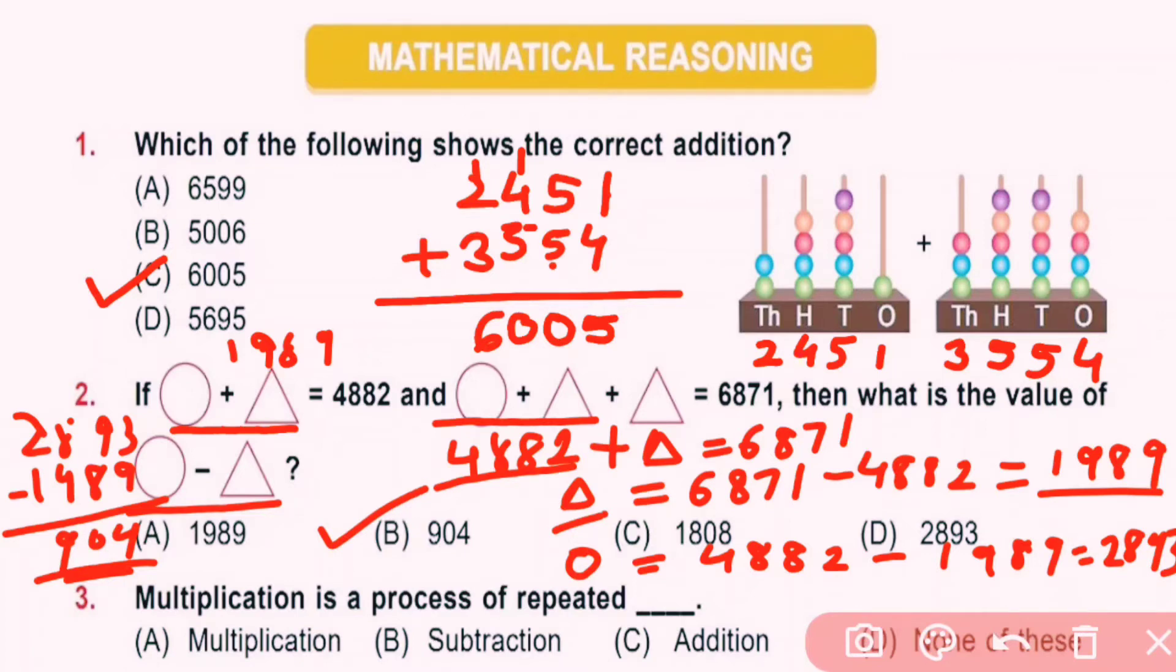Question number 3: Multiplication is the process of repeating addition. Means 2 into 3 is 6 and 2 plus 2 plus 2 is also 6.